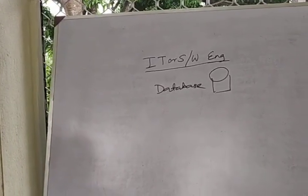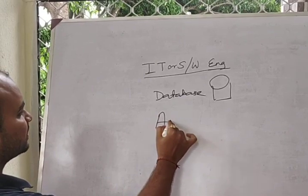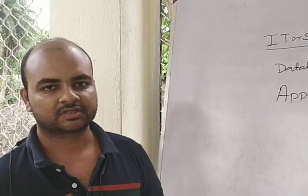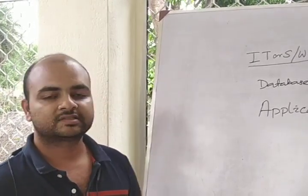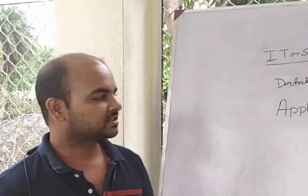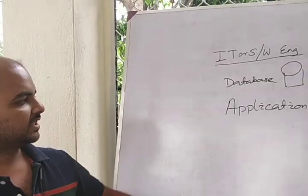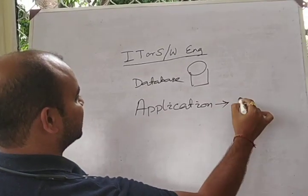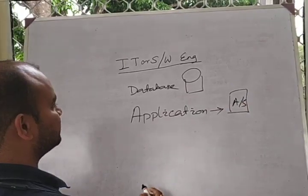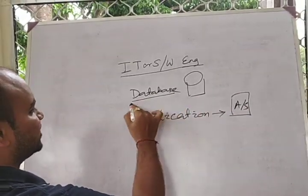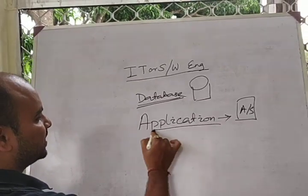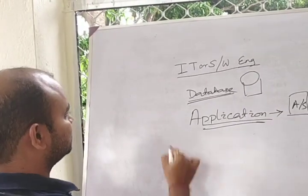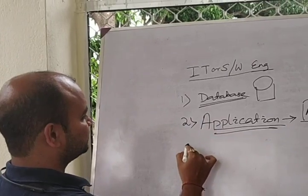This is the database where data resides. Next component is applications. Application is nothing but software that a software engineer builds and test engineers perform testing for. The application resides on an app server. Database-side application runs here, all front-end side application will be deployed or installed and run. Number one, we have database; number two, application.